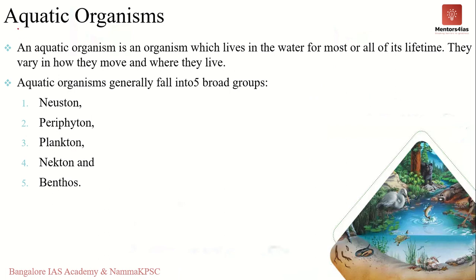Moving on to aquatic organisms — both flora and fauna are unevenly distributed in the aquatic ecosystem, but can be classified into five major groups based on where they are found within the water body. The five types are: neuston, periphyton, plankton, nekton, and benthos. We'll briefly discuss each of these.